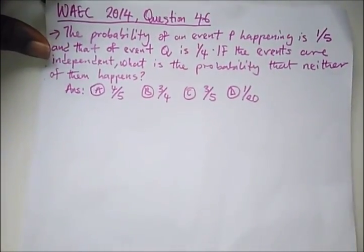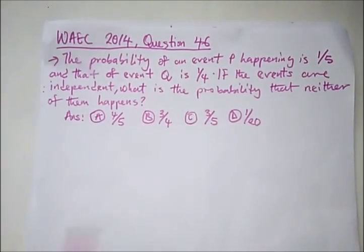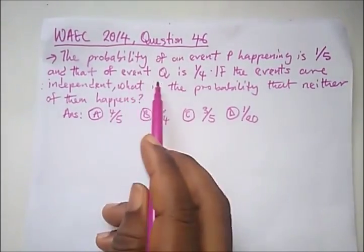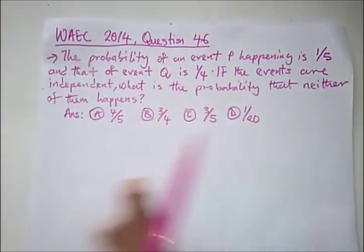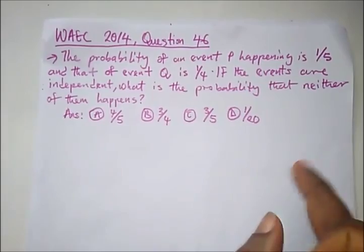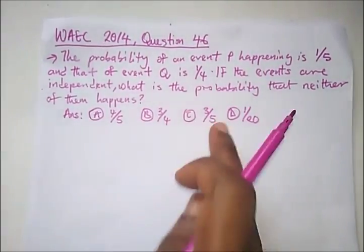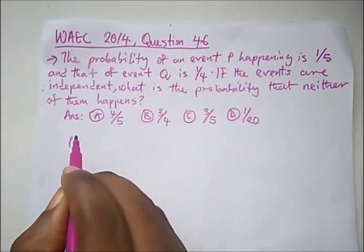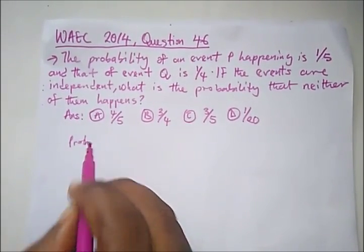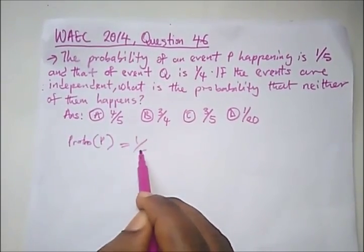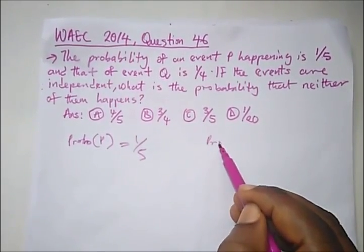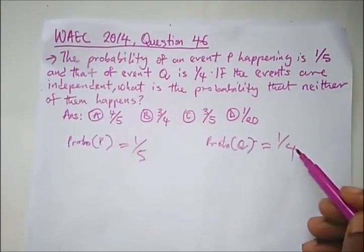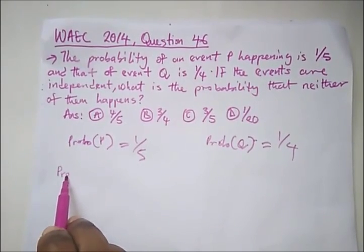It says the probability of an event P happening is 1 over 5, and that of event Q is 1 over 4. If the events are independent, what is the probability that neither of them happens? Now, this is the probability that it happens. Probability for P is 1 over 5, and that for Q that happens is 1 over 4. If it doesn't happen, that's neither this happens.